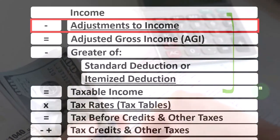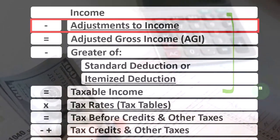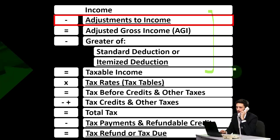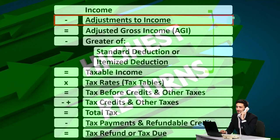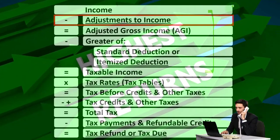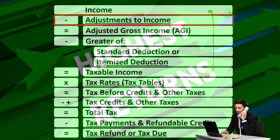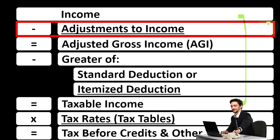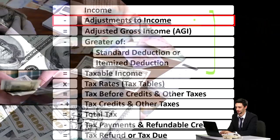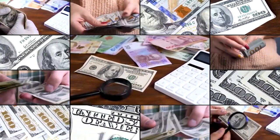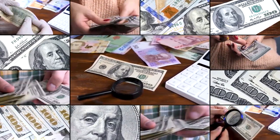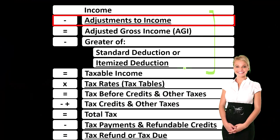We want taxable income as low as possible, as opposed to normal income statement rules where we typically want net income as high as possible. Now we're looking at one of the components of the deductions — these being the adjustments to income. You can call them above-the-line deductions, Schedule 1 deductions, or adjustments to income, which act like a contra income account on the way down to taxable income.